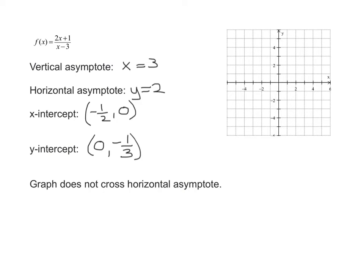So let's look at the vertical asymptote x equals 3. So let's graph that first. Remember, asymptotes are always with dotted lines. So here's my vertical asymptote x equals 3. I have a horizontal asymptote of y equals 2. And remember, graphs never cross a vertical asymptote. And we found in this case it doesn't cross its horizontal asymptote either.